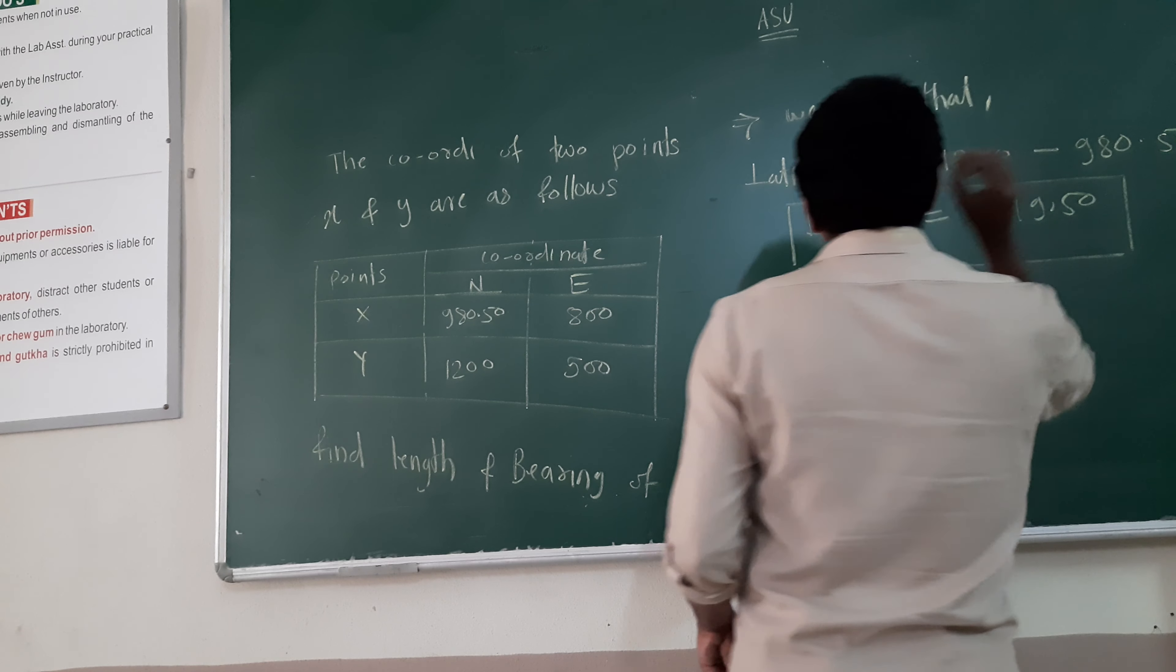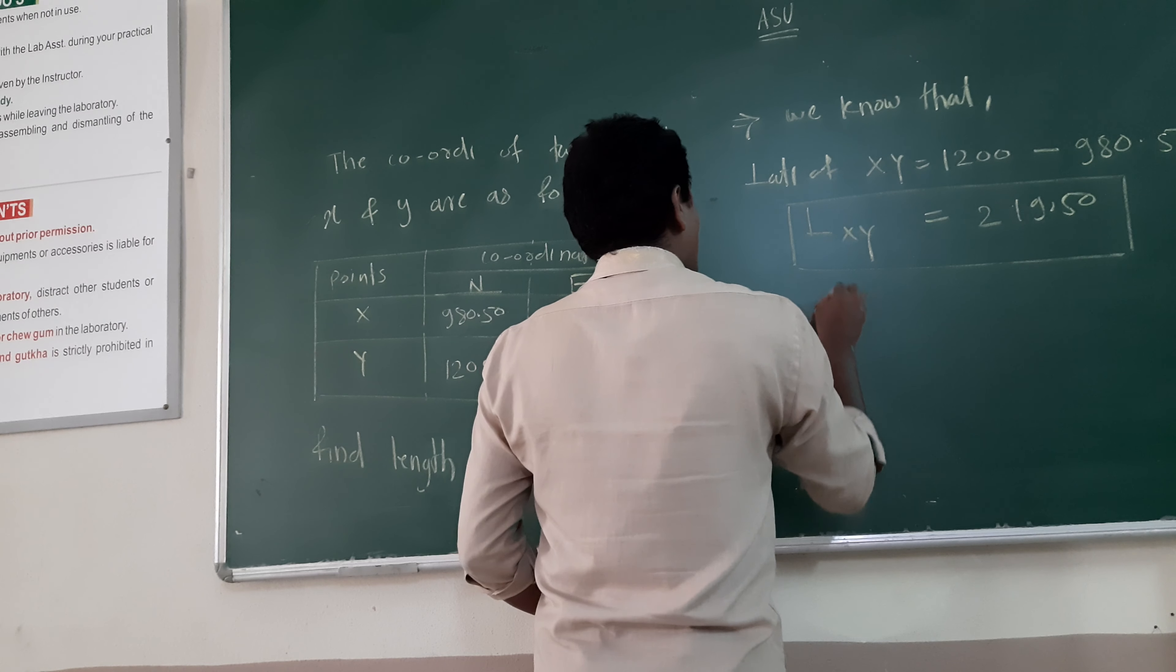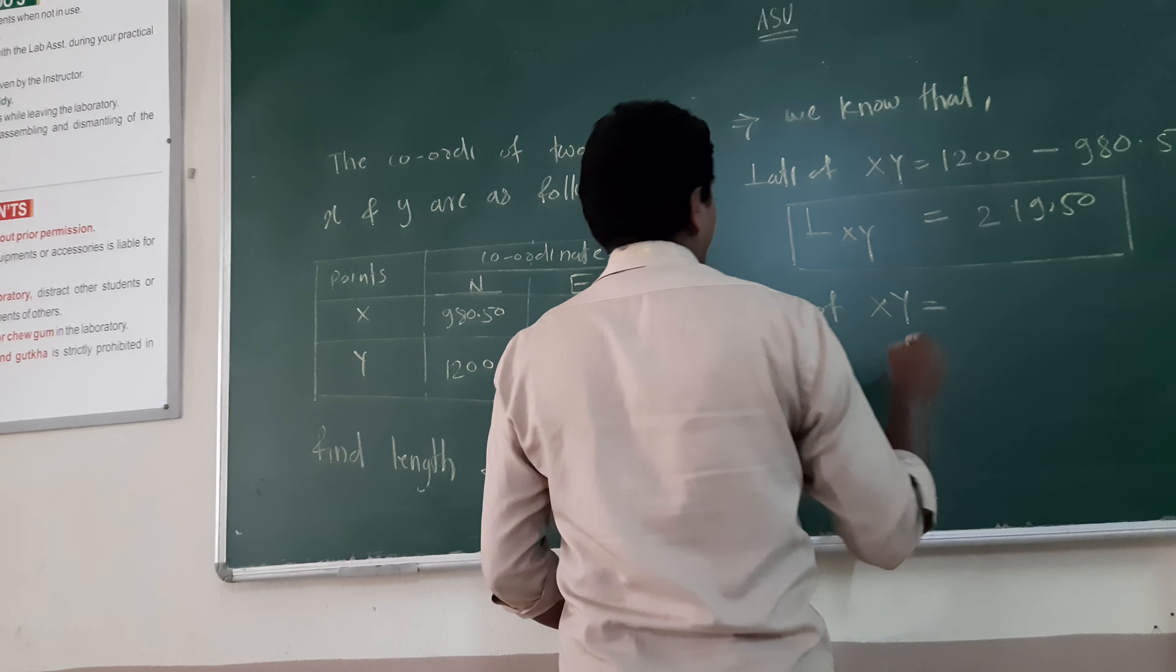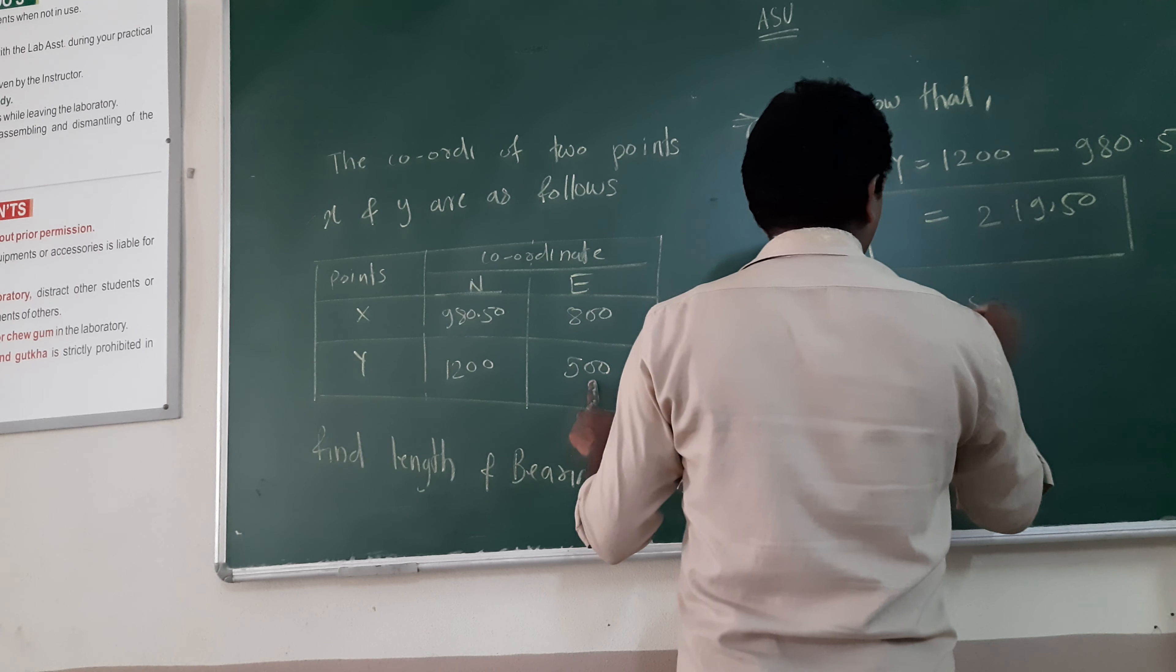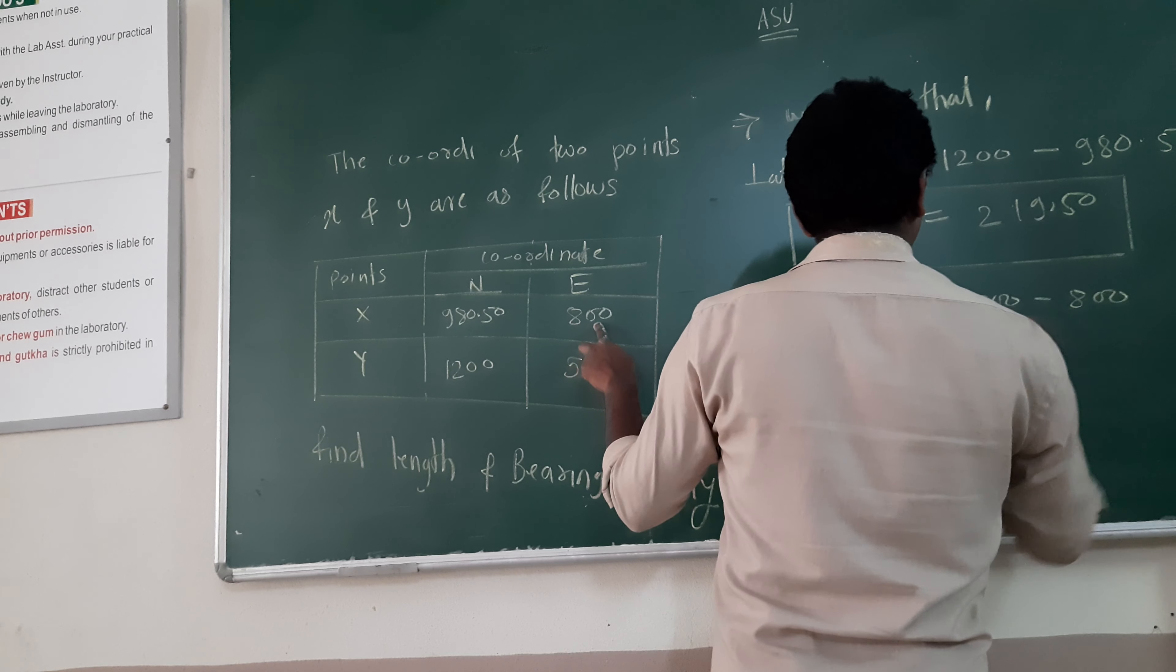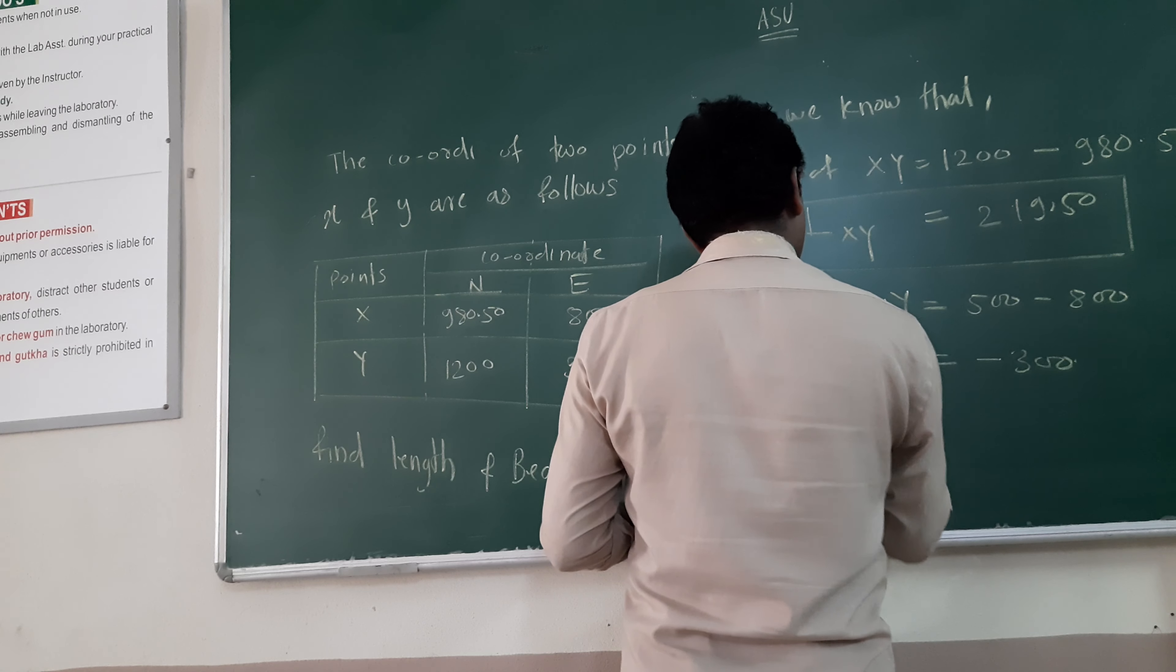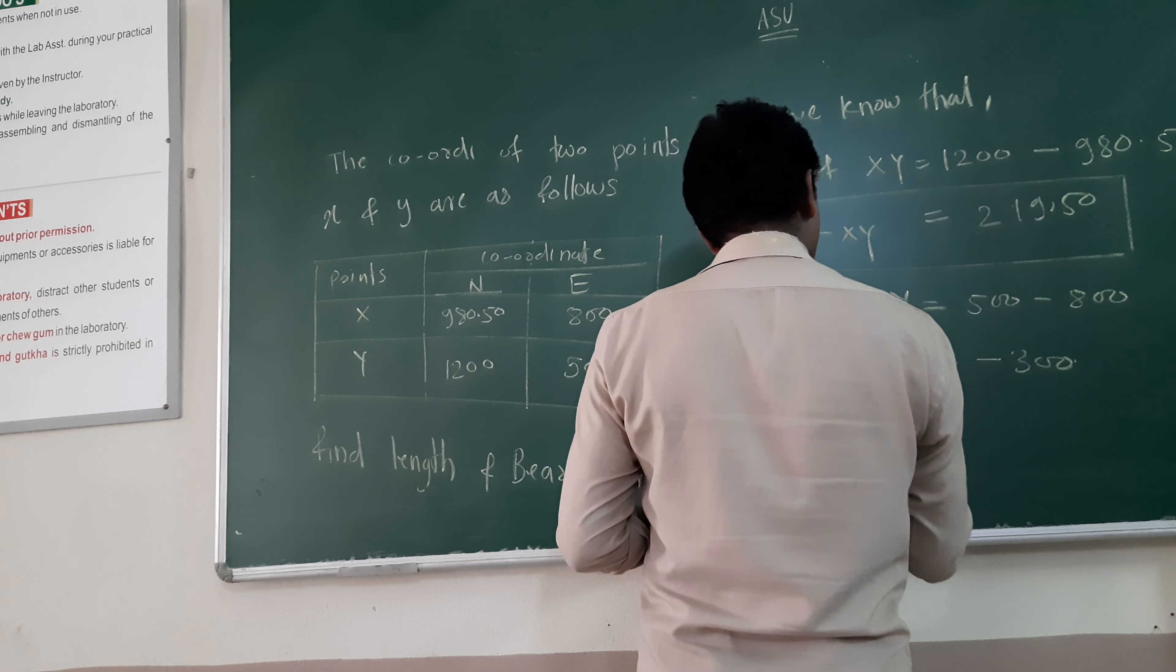Okay, similarly, departure of XY is equal to 500 minus 800. That comes out to be minus 300. That is the departure of XY.